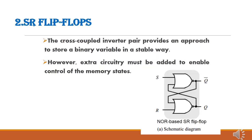Next, let us see the SR flip-flop. This is the cross-coupled inverter pair — a NOR-based SR flip-flop. Here S stands for set and R stands for reset. We have two outputs, Q and its complement Q bar. This flip-flop is used for storing a single bit. If you want to change the state of the flip-flop, we need to add an extra circuit to enable the state change from one state to another.